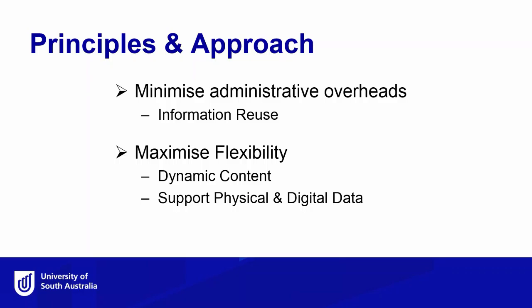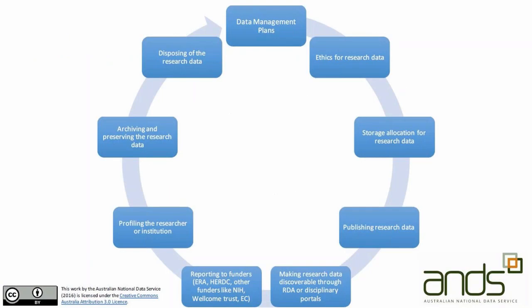The other principle is that we are trying to maximise flexibility. We use dynamic content wherever we can. An example of that is that we have an online human ethics application form which our researchers use to apply for ethics approval. We also support both physical and digital data, so the systems we've created aren't just about digital data — they're about physical objects and primary materials, whether that be an artwork or blood samples, and we can point to where they are as well as pointing to the locations for digital data.